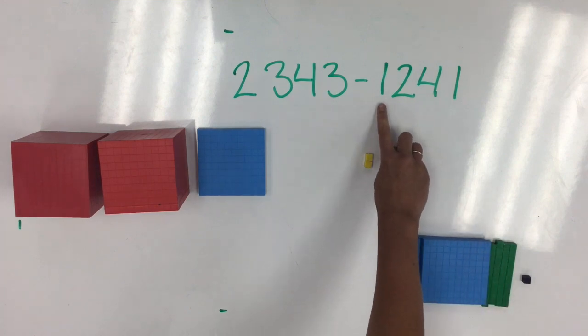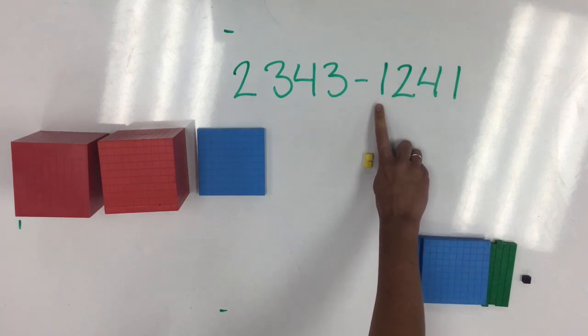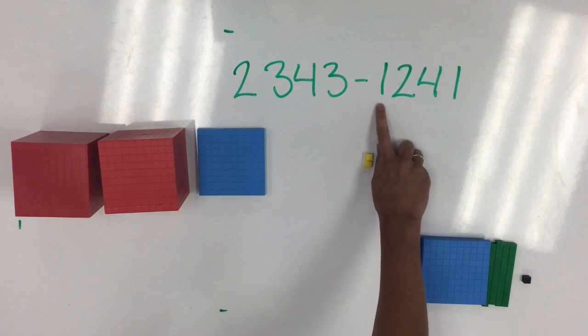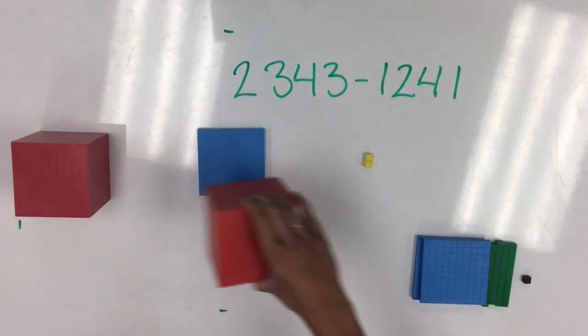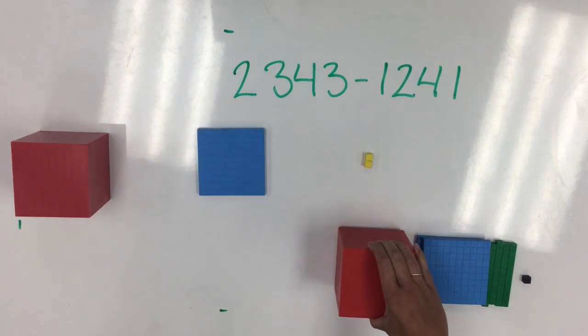Finally, we move to the thousands place. Here, I have one thousand that I need to take away, so I will remove one thousand from my original number.